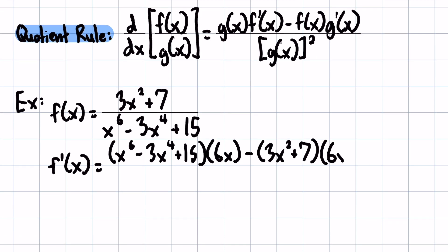...which, okay, 6x to the fifth minus 12x to the third, and the 15 is a constant, so it goes away, over low low, so the denominator squared. And that is going to be our derivative.